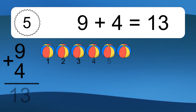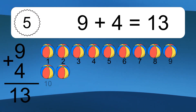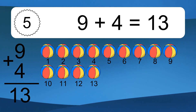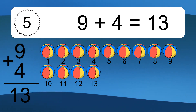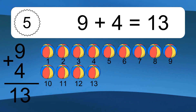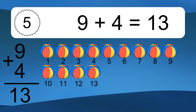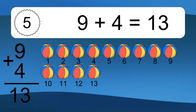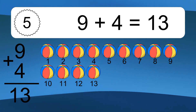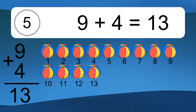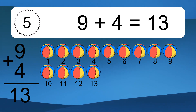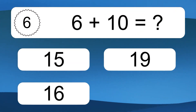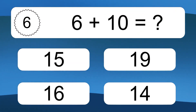9 plus 4 equals 13. Let's count it. 1, 2, 3, 4, 5, 6, 7, 8, 9, 10, 11, 12, 13.